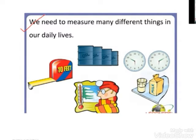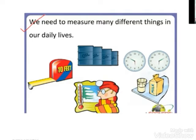If we have to measure the height of a person, if we have to measure the weight of something — for example, if you have to buy fruits and vegetables, you will tell the vegetable seller that I need one kg of potatoes, I need two kg of tomatoes. So in this way, you are telling how much you need, and then he will weigh that and give it to you.